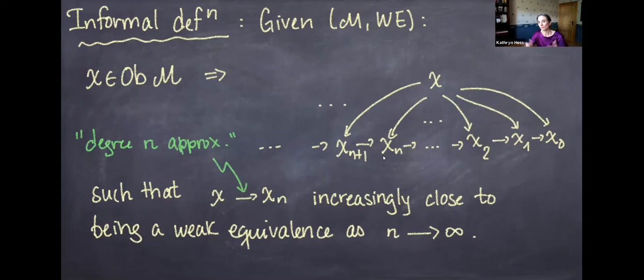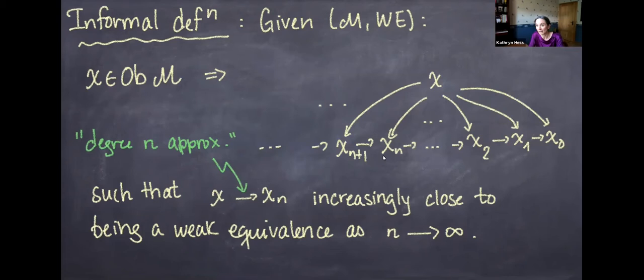When we have a calculus, starting with some object X in the category M, the calculus should spit out a sequence of approximations to X that are related to each other, and we need some way of comparing X to each of these — morphisms connecting X to each successive approximation. The morphism from X to X_N should be increasingly close to being a weak equivalence as N goes to infinity. This is like an Nth Taylor polynomial — an approximation to a function getting closer and closer to the actual function.